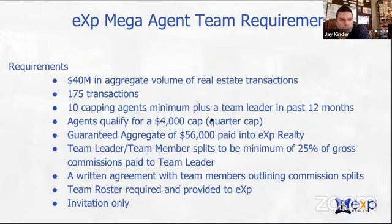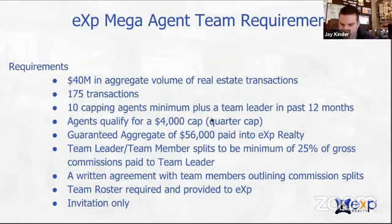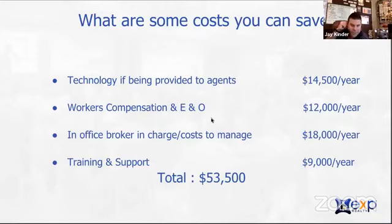For certain circumstances it makes sense to structure it differently. There are a couple of ways to structure things — we'd have to have a conversation about agents who are absolutely killing it on your team. The bottom line: it's a $4,000 quarter cap, and if they want to chase the $16,000 back in stock, that's a gamble. If they don't hit it, they paid $16,000 unnecessarily. My recommendation: stay on your $4,000 cap and go buy the stock with your own money — no risk of hitting it or not.